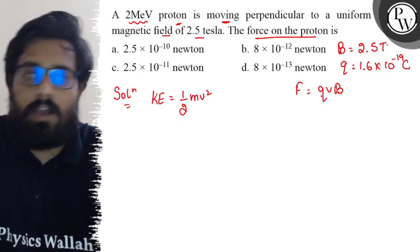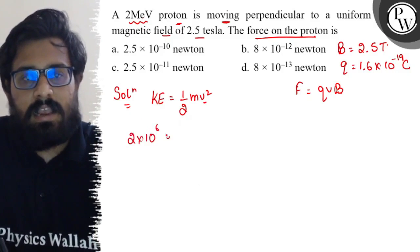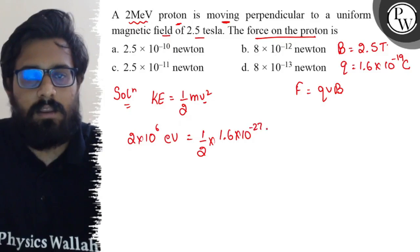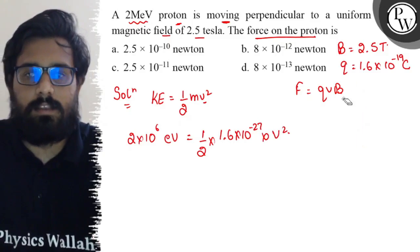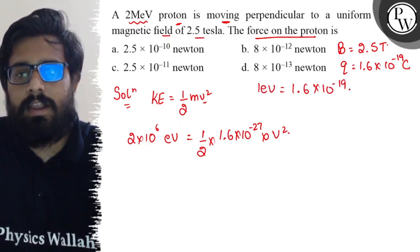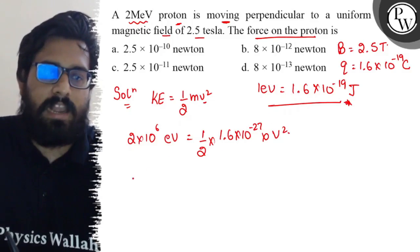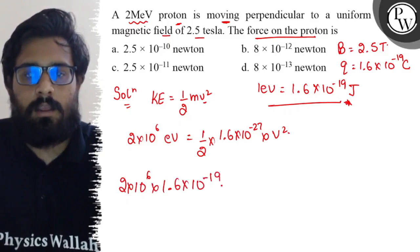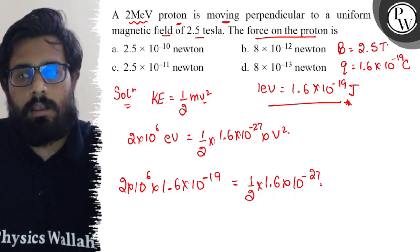Now for the velocity: 2 mega electron volt can be written as 2 into 10 to the power 6 electron volt, which equals half into mass 1.6 into 10 to the power minus 27 into v square. Now 1 electron volt can be written as 1.6 into 10 to the power minus 19 joule. So putting that in: 2 into 10 to the power 6 into 1.6 into 10 to the power minus 19 joule equals half into 1.6 into 10 to the power minus 27 into v square.